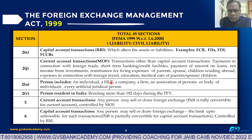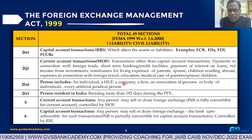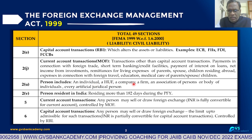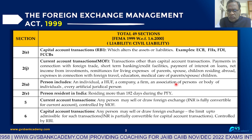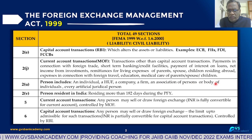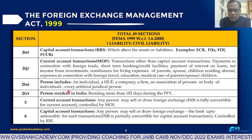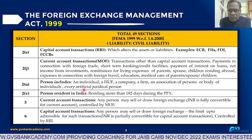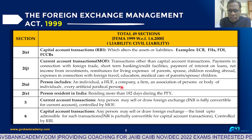Person includes: an Individual, HUF, Company, a Firm, an Association of Persons, a Body of Individuals, and every Artificial Juridical Person.